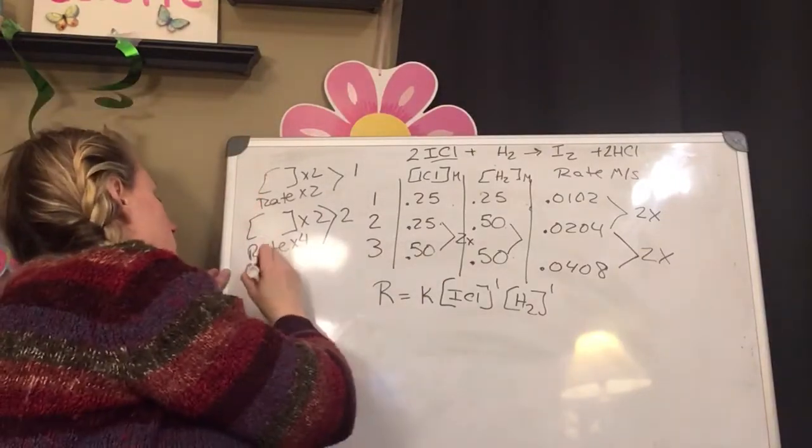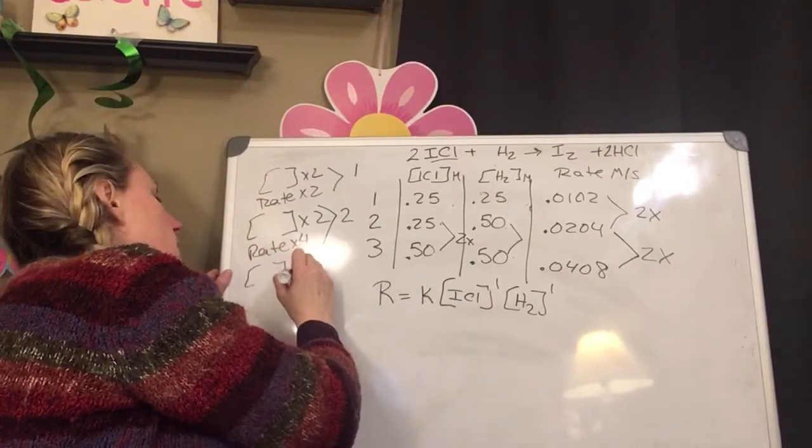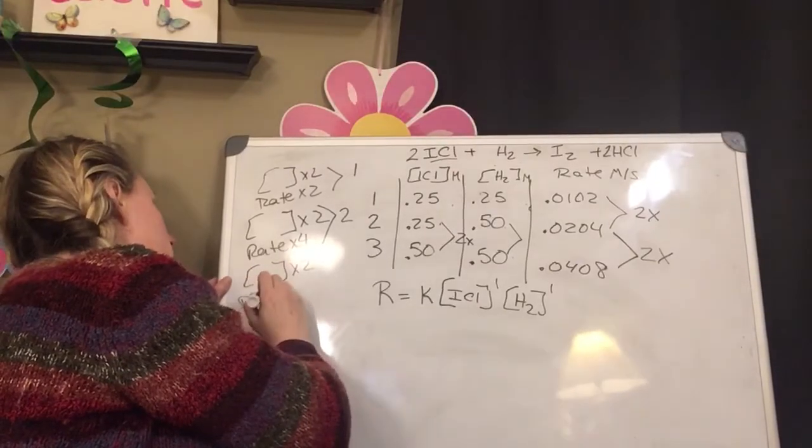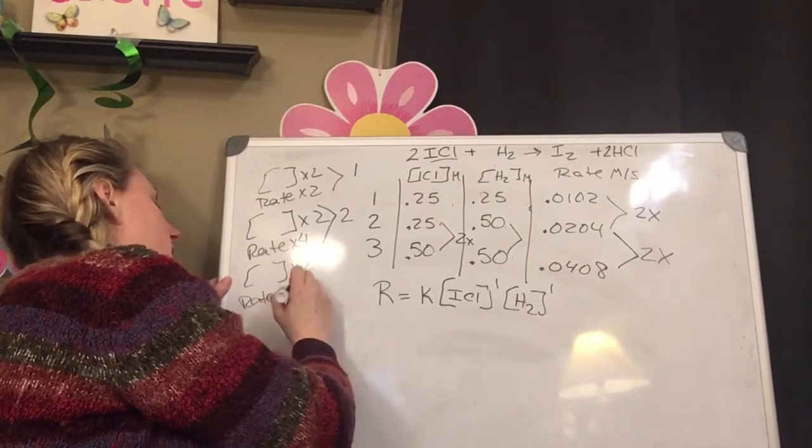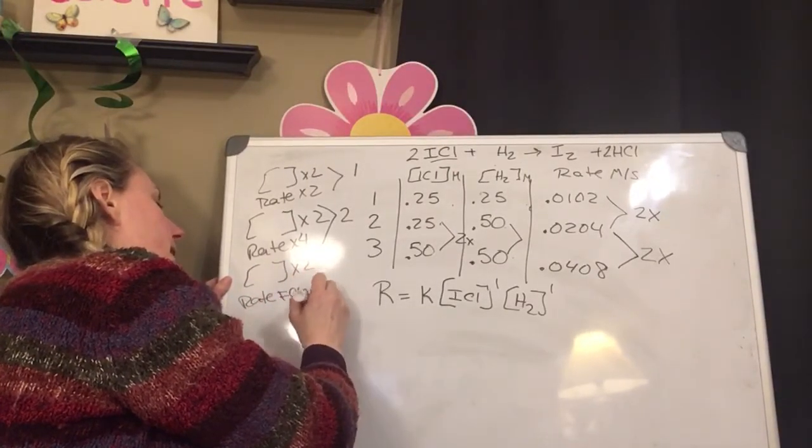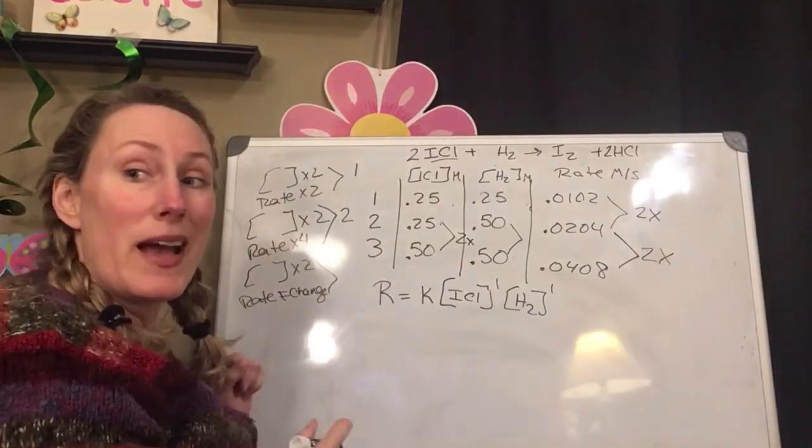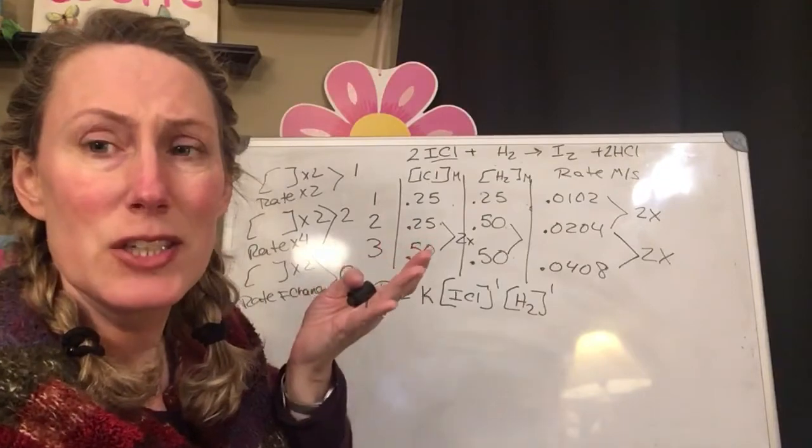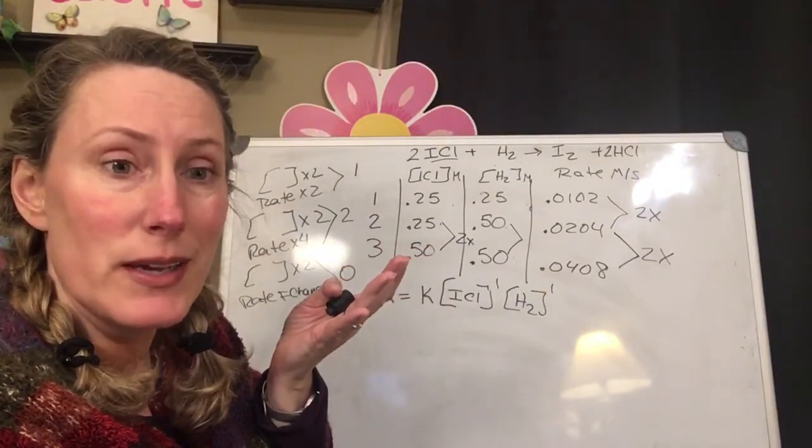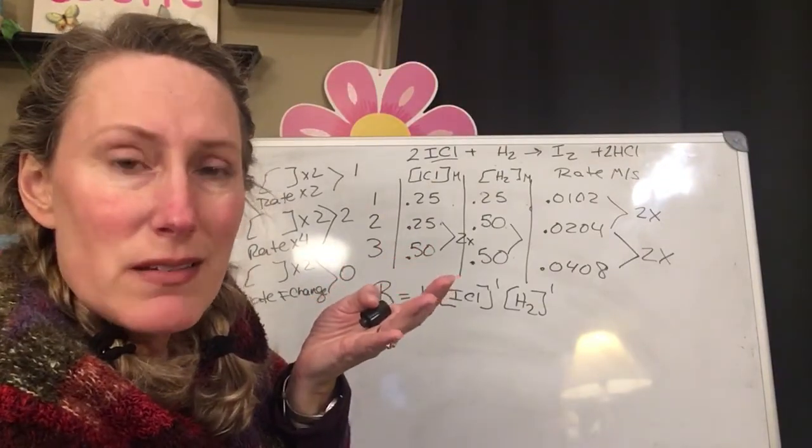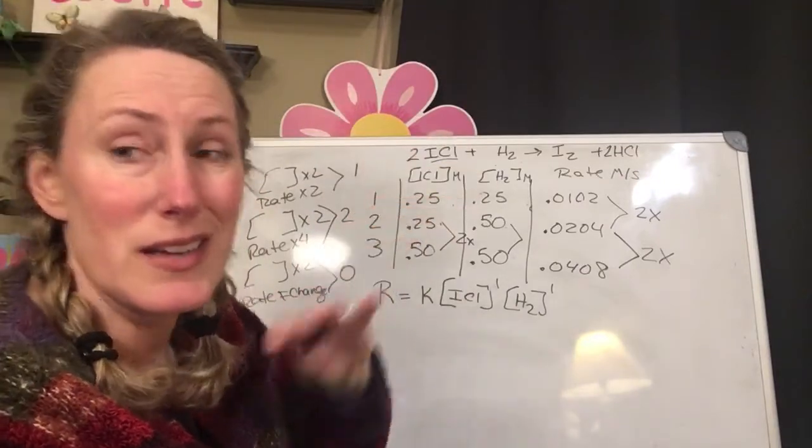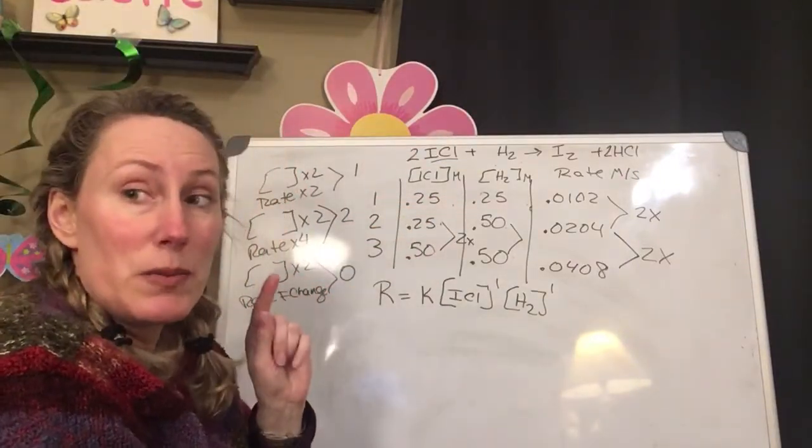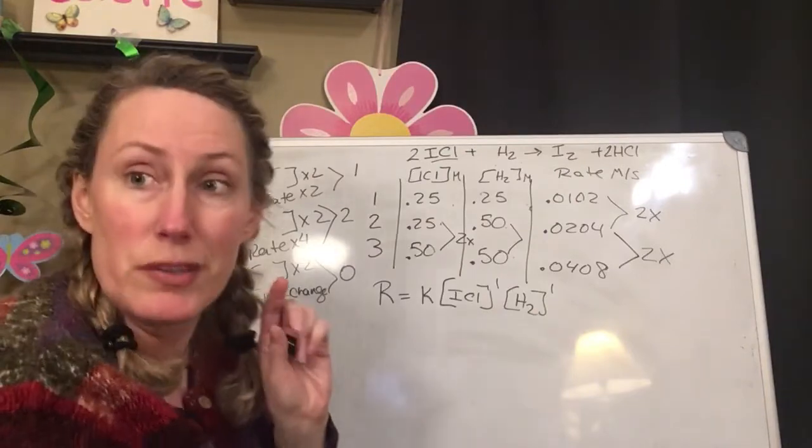Sometimes my concentration will double and my rate will not have a change. Then my exponent is 0. That means no matter how much of the chemical I put in, it's not going to change my rate. I can put as much in as I want and it doesn't change my rate.